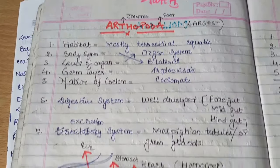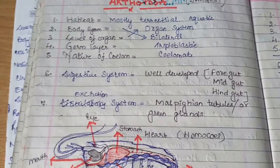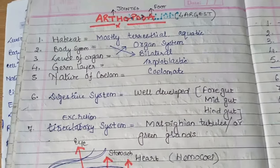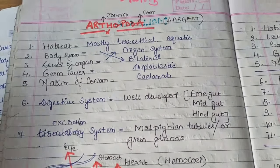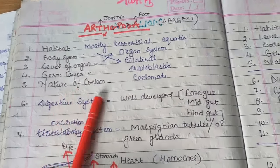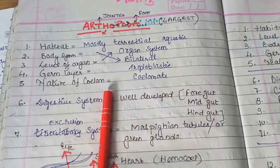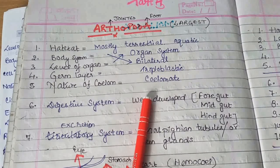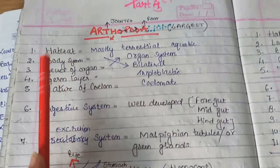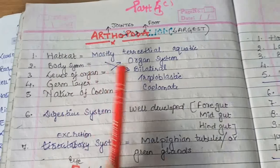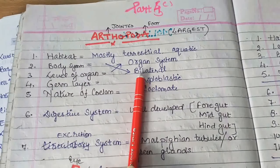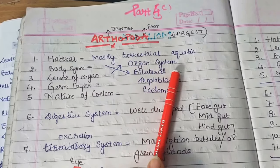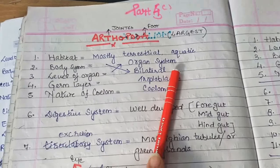Now let's come to their basis of classifications and their functional systems. Regarding habitat, their organisms are mostly terrestrial, but some among them are aquatic living as well. Body symmetry: they have bilateral symmetry. Level of organization: organ system level of organization.